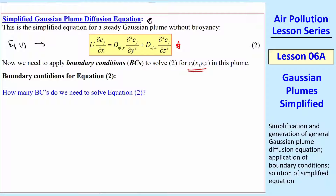How many boundary conditions do we need to solve equation 2 for our unknown variable c_j? C_j is a function of x, y, and z in this plume. To answer this question, we need to look at the equation. This differential equation is second order — you look at the orders of the derivatives: here's a first order term, and here are two second order terms. The highest order in any of the variables is the order of the equation. It's first order in x, but second order in y and second order in z.